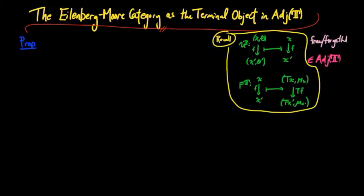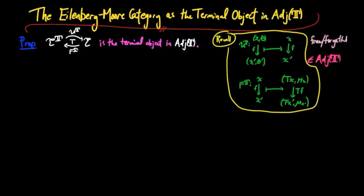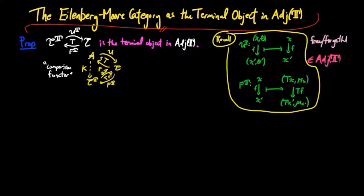We are now able to prove that the adjoint situation for the Eilenberg-Moore category is a terminal object in the category of T-inducing adjoint situations. Precisely, if we are given a T-inducing adjoint situation F left adjoint to U from A to E, then there is a unique morphism K, called the comparison functor, in the category of T-inducing adjoint situations. In other words, we have U^T ∘ K equal to U, and K ∘ F equal to F^T.